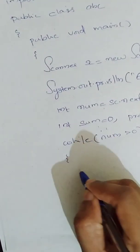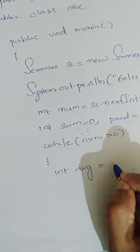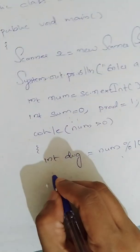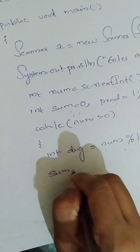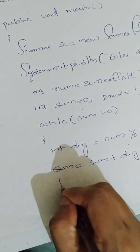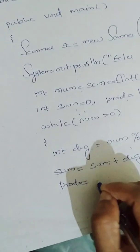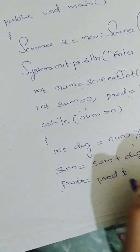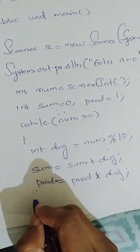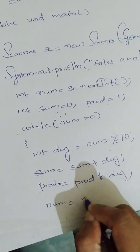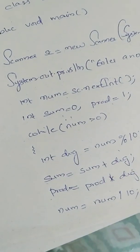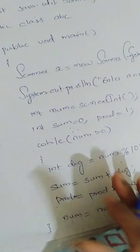And while num greater than 0, int digit is equal to num modulus 10 to get the last digit. Sum is equal to sum plus digit. Prod is equal to prod star digit. Next, num is equal to num by 10 to get the previous digits. Loop close.